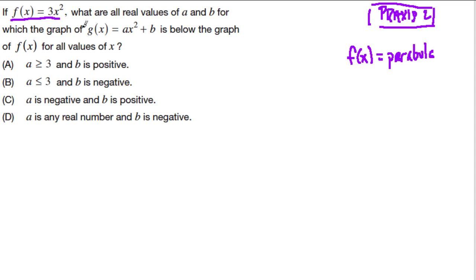And we want to know what are all the real values of a and b for which the graph of g of x equals ax squared plus b is below the graph of f of x for all values of x.